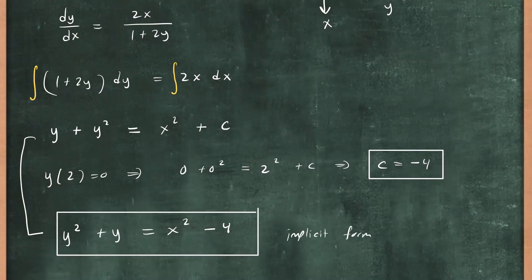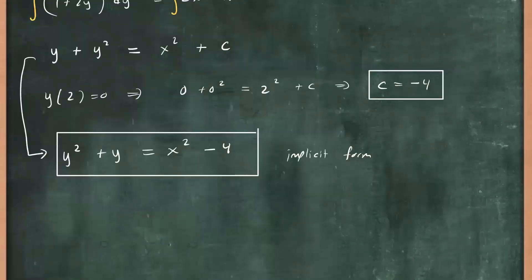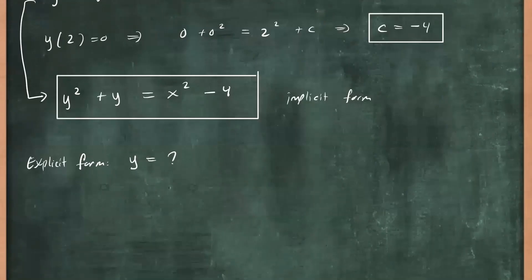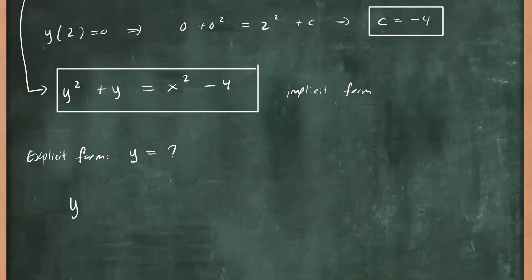Now what if you wanted the explicit form of the solution? Well, explicit means you want to solve for y. So we want y equals some function of x. Now how do we do that? Well, let's start from here. So you have y² + y = x² - 4. That's the solution we got.